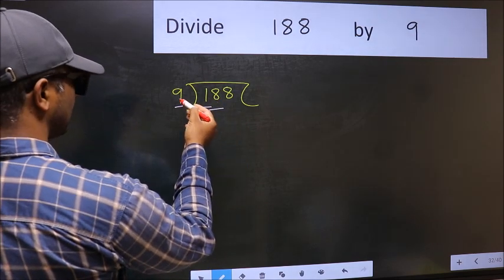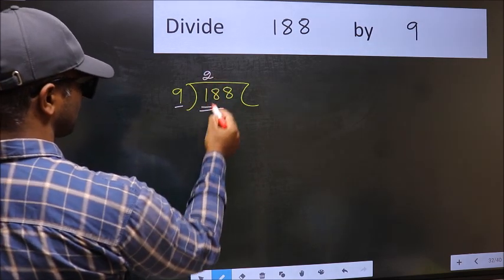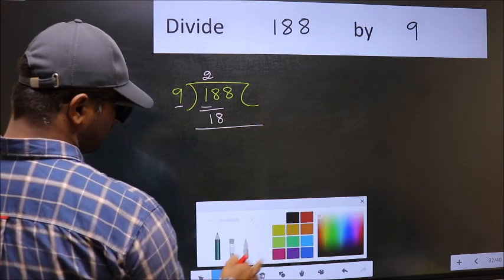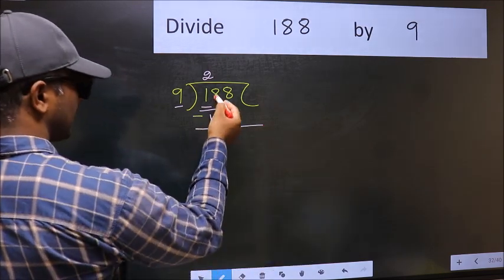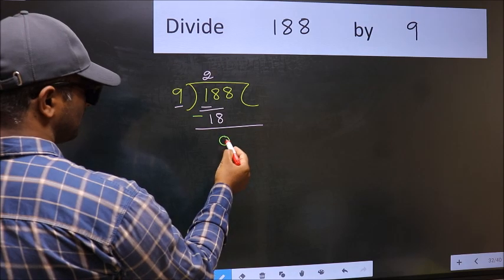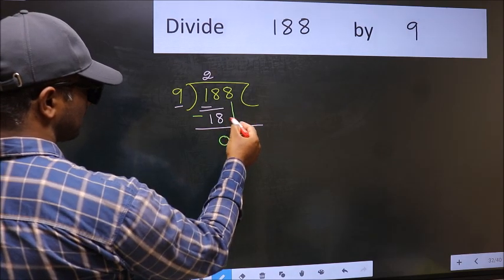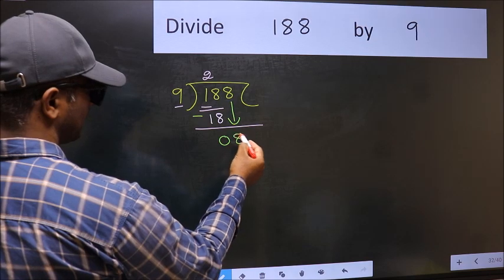When do we get 18 in the 9 table? 9 times 2 is 18. Now subtract: 18 minus 18 equals 0. After this, bring down the next number, so 8 comes down.